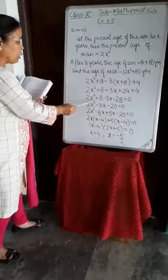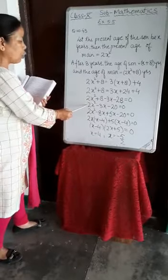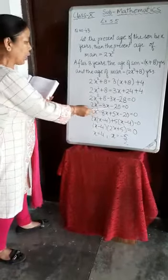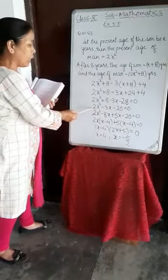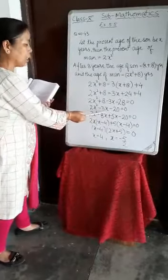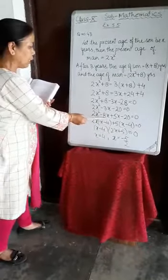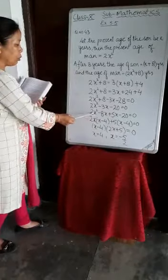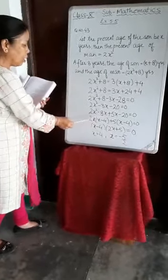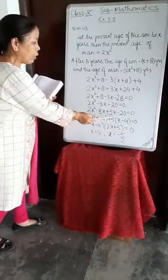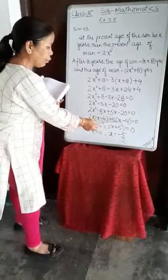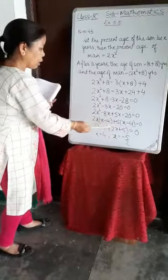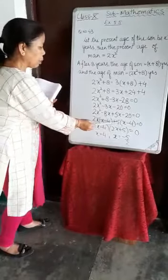When X squared has a coefficient, we multiply that coefficient by the last constant and find factors to split the middle term. So 2 multiplied by 20 is 40; splitting 40 into 8 and 5 gives minus 3X. We split 3X into minus 8X plus 5X. So: 2X squared minus 8X plus 5X minus 20 equals 0. From the first two terms, 2X is common giving 2X(X minus 4); from the last two terms, 5 is common giving 5(X minus 4). So (X minus 4)(2X plus 5) equals 0.